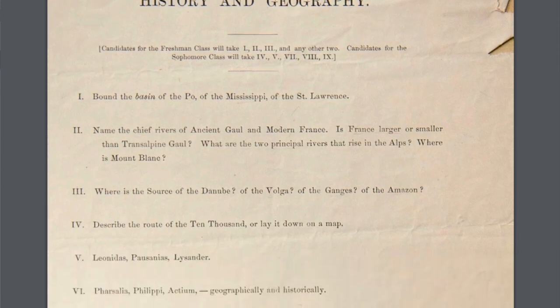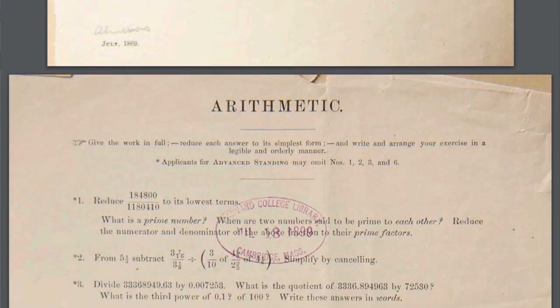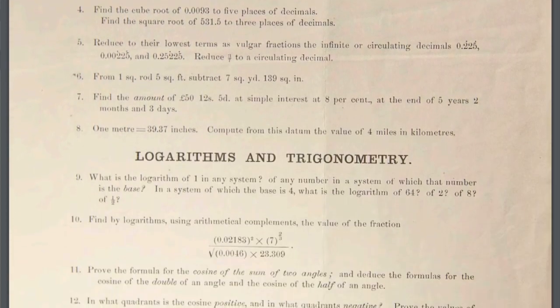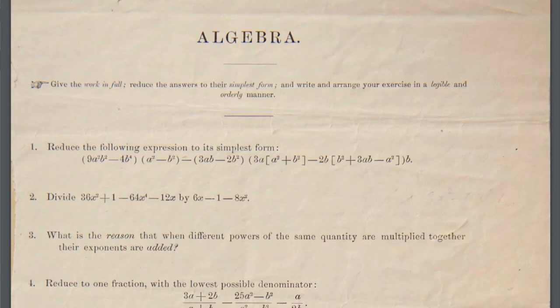After that it moves on to history and geography. One of the questions is to describe the route of the 10,000 or lay it down on a map. Another question is to compare Athens with Sparta — and I imagine today's students get most of their knowledge about that from the movie 300 rather than actually having learned about it in class. In the arithmetic section, students are asked to find the cube root of 0.0093 to five places of decimals and find the square root of 531.3 to three places of decimals, and of course this is all done without a calculator.